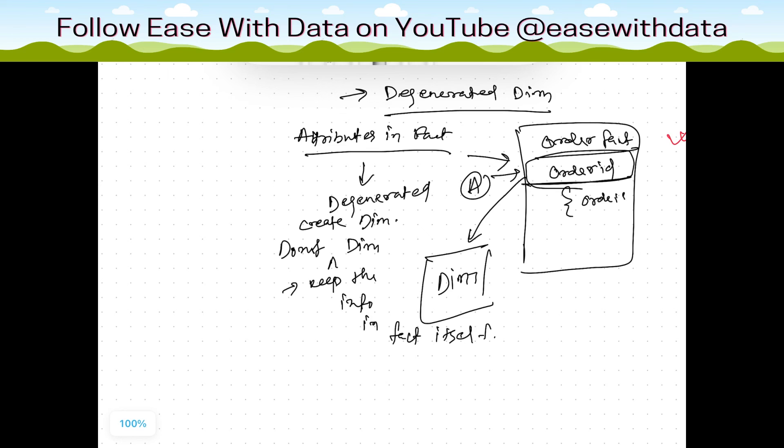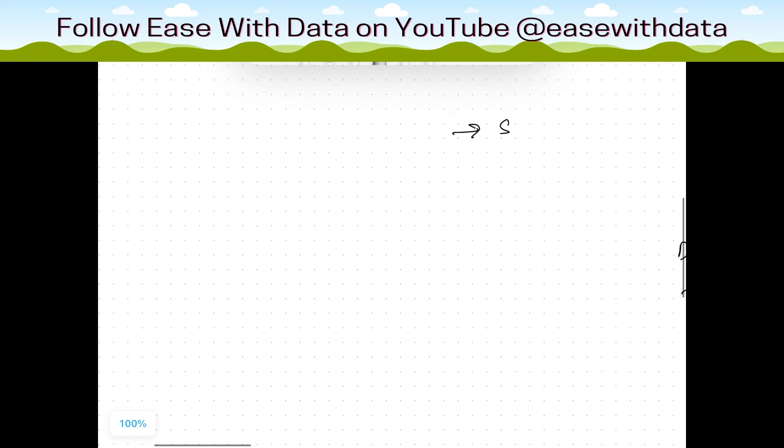So this concludes our types of dimensions. Now in coming section what you will see is we'll see SCD1, SCD2, and SCD3 along with examples, and these three are the most important type of dimensions that are in data warehouse.